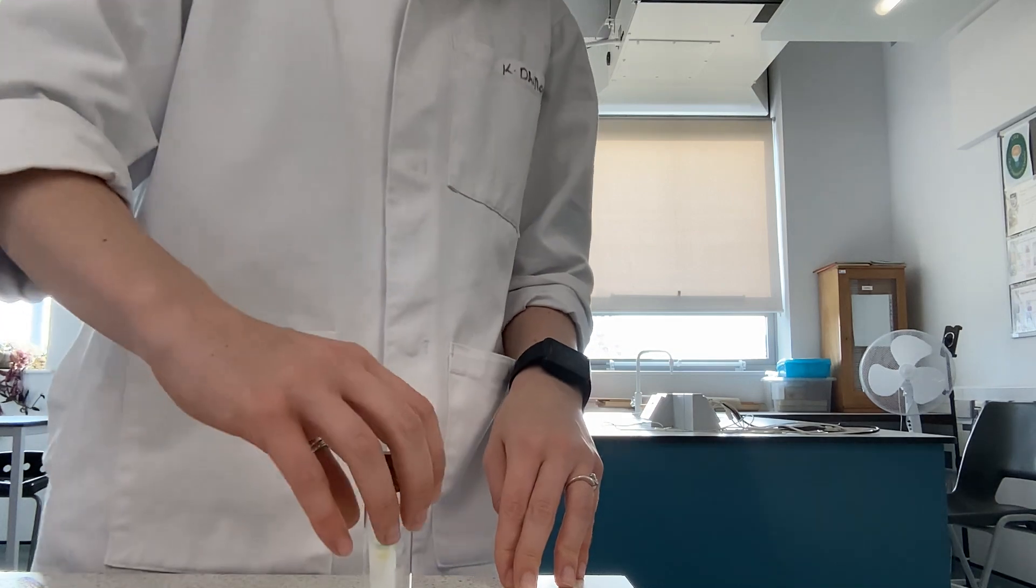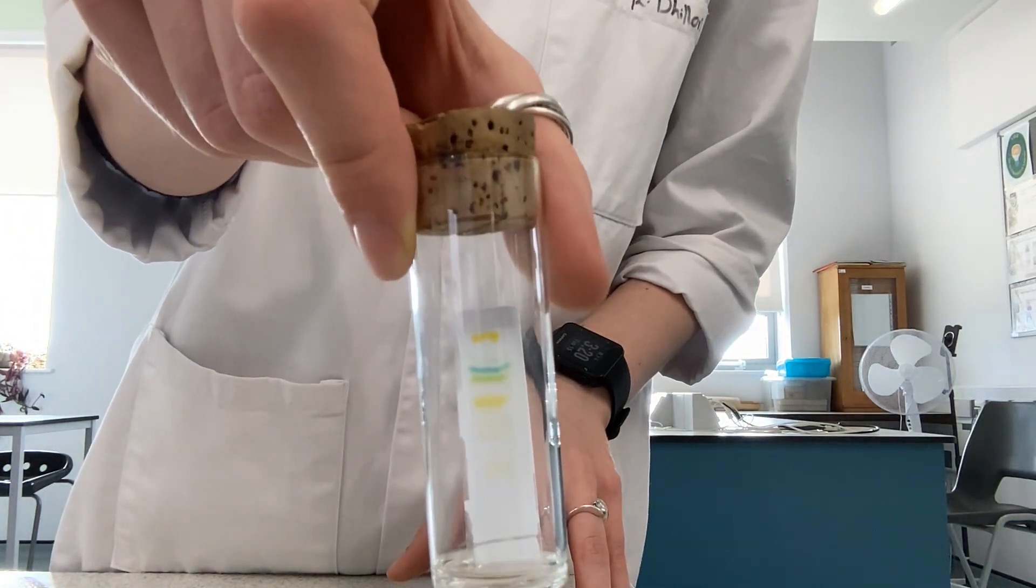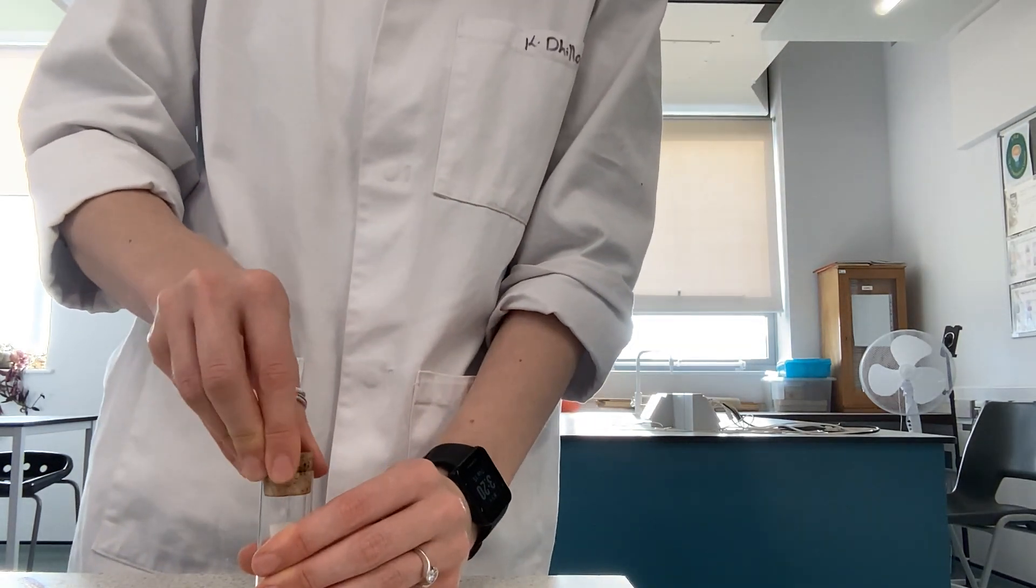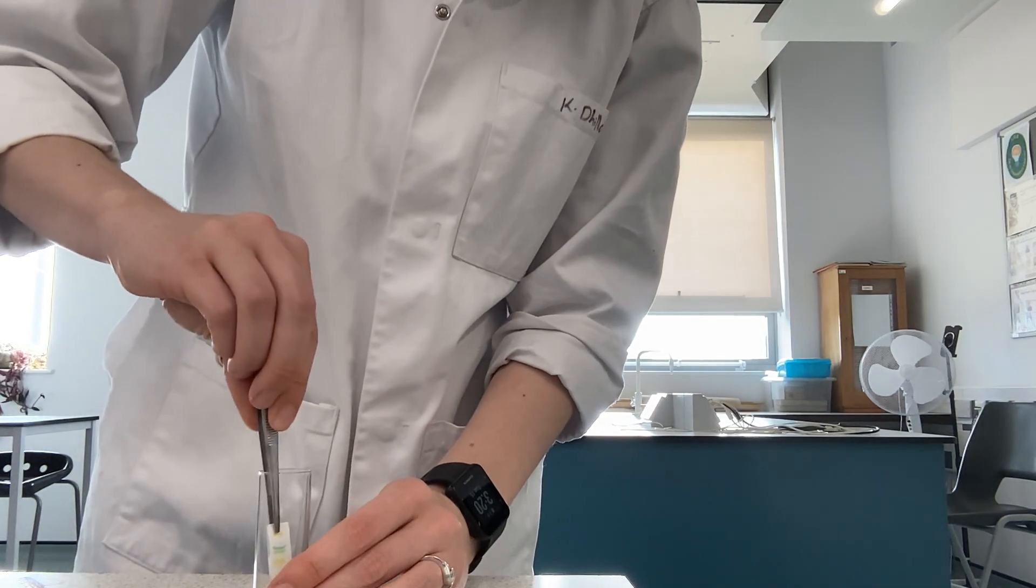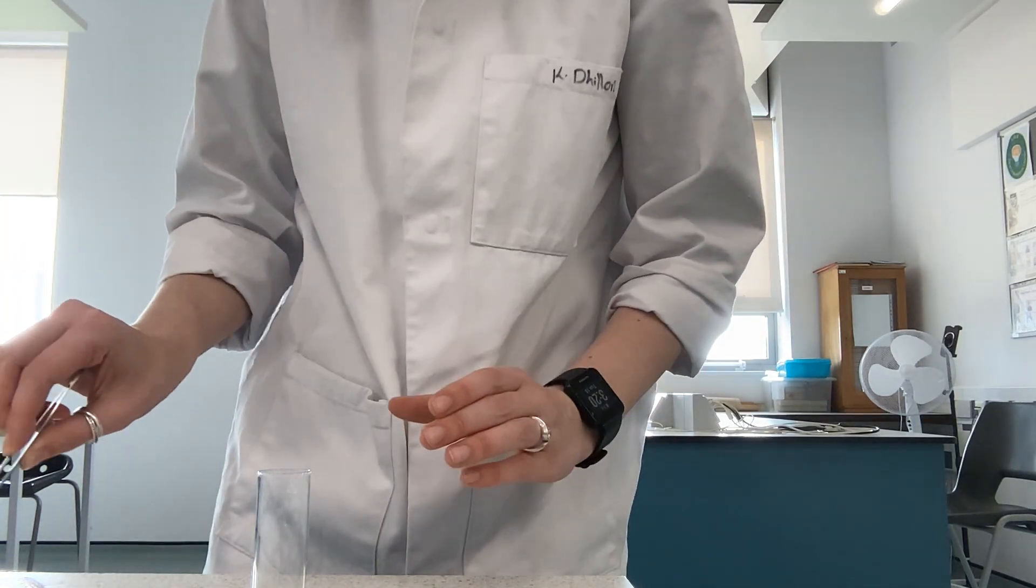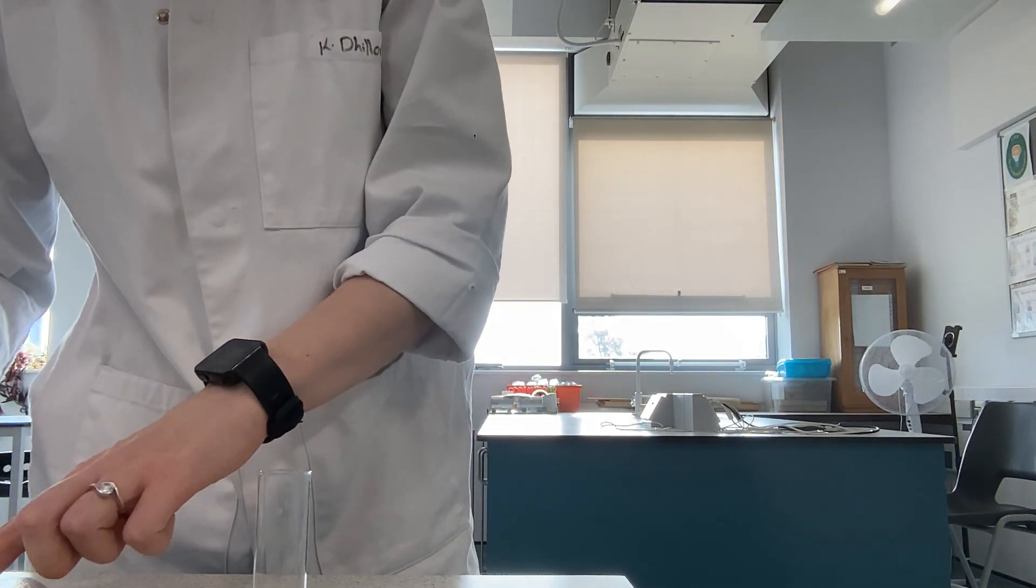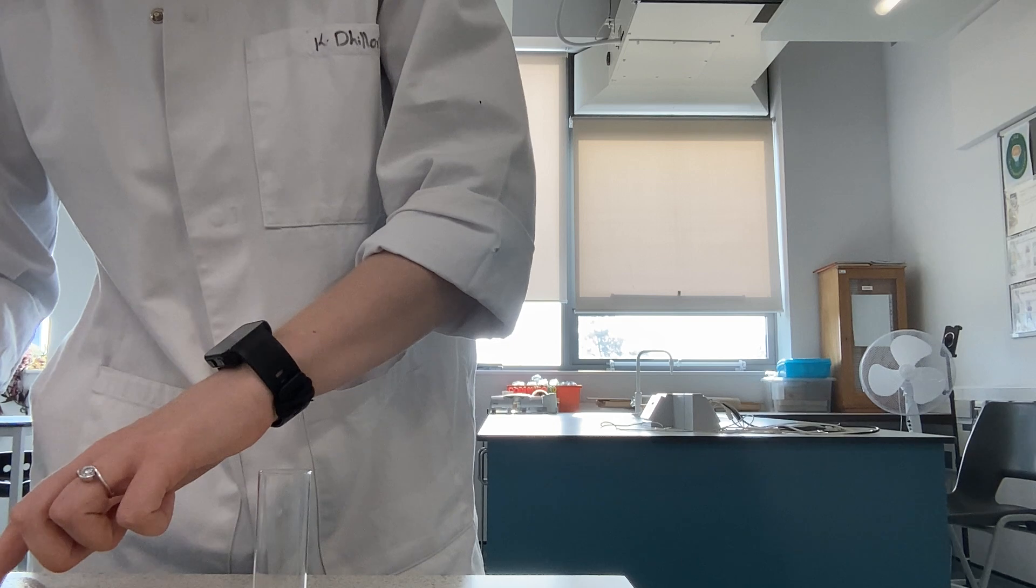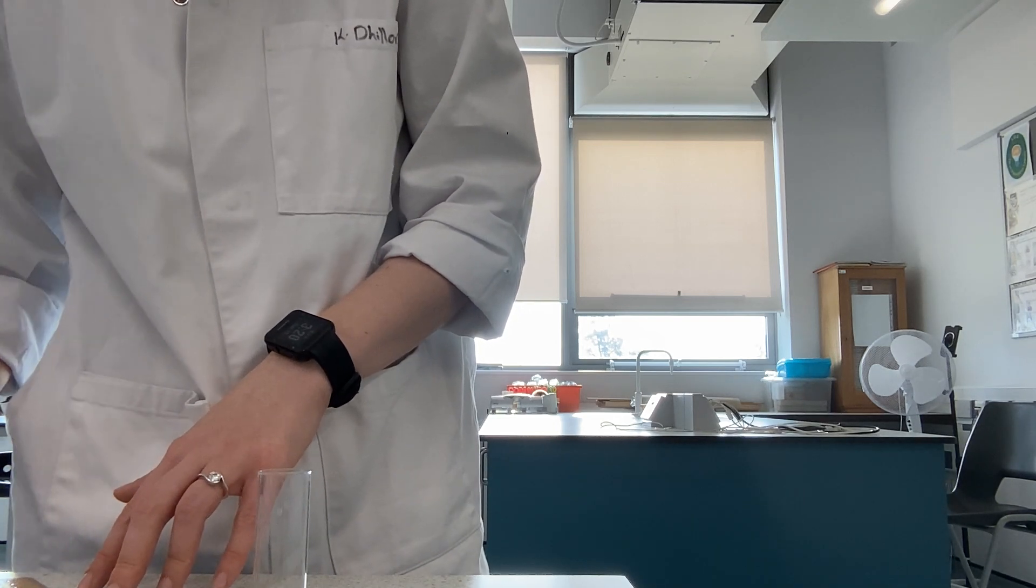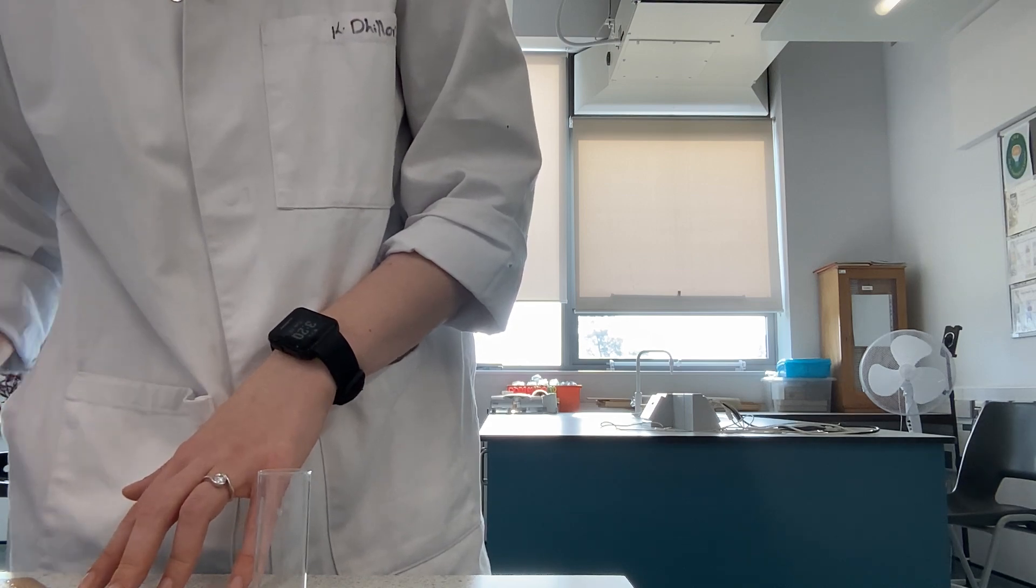Having left it to run, we can now see that the solvent front is very close to the top, so it's time for us to take it out. We'll just use some forceps to take our TLC plate out, and then what we'll do is place it down next to a ruler so that we can then do some measurements. We'll take a photo so that we can come back to this at a later date and do a whole range of measurements from there.